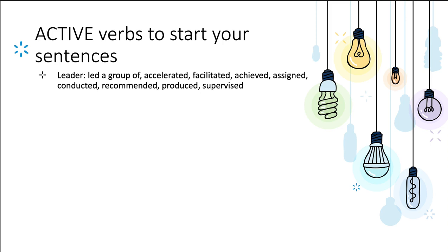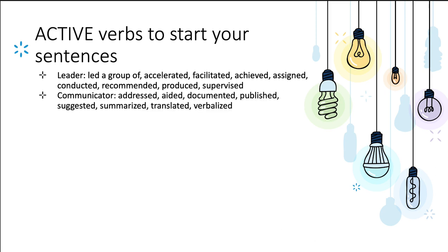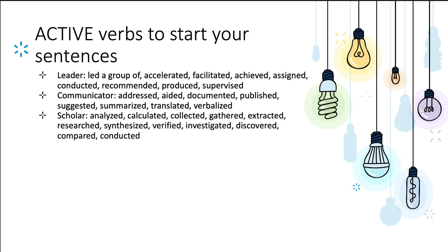Under the leader role you can also use: supervised. For communicator, instead of writing 'communicator' you can say addressed, aided, or 'communicated with a team of five nurses and a physician assistant to take care of 30 patients in an underdeveloped area.' Published — being a researcher also requires you to be a good communicator — suggested, summarized. All of those are active verbs you can use to start your description.